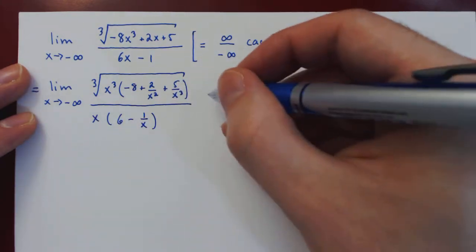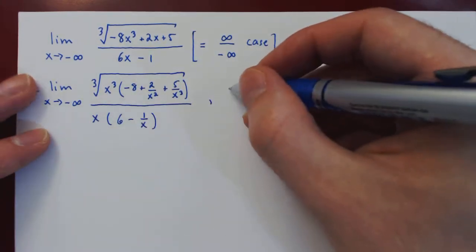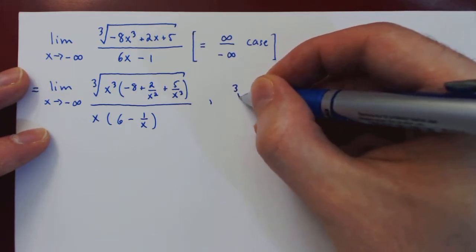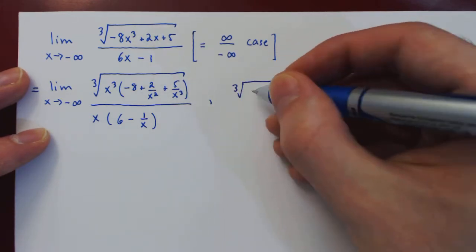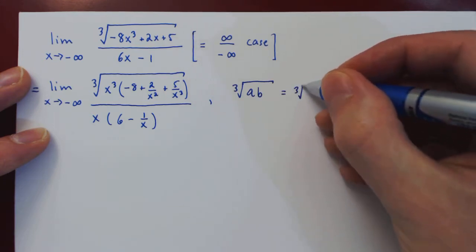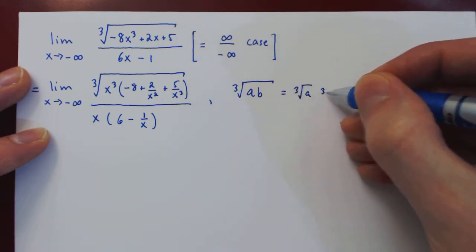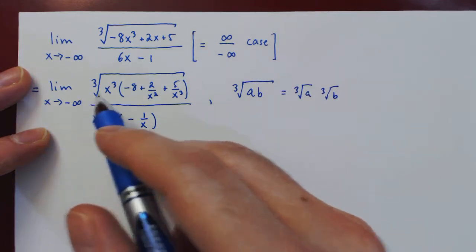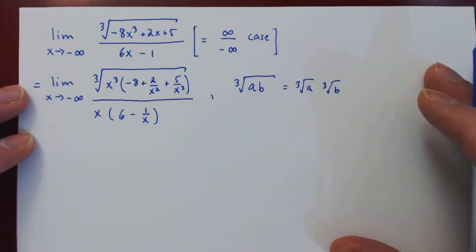We now have the cube root over a product of two terms. So in general, the cube root of ab can be broken up as the cube root of a times the cube root of b. So we can distribute here the cube root on our two terms.